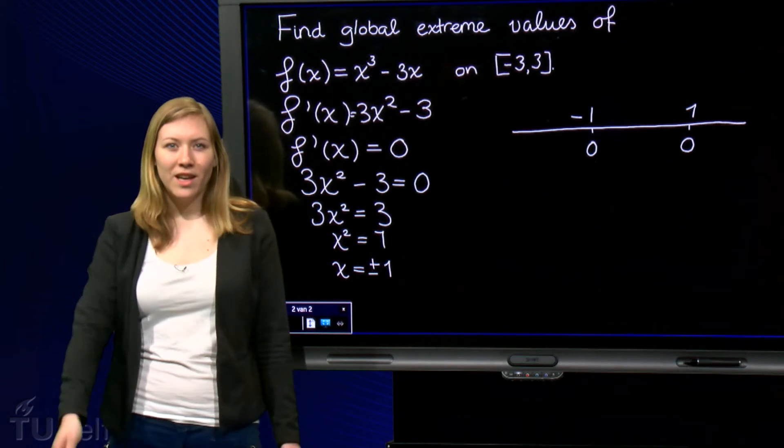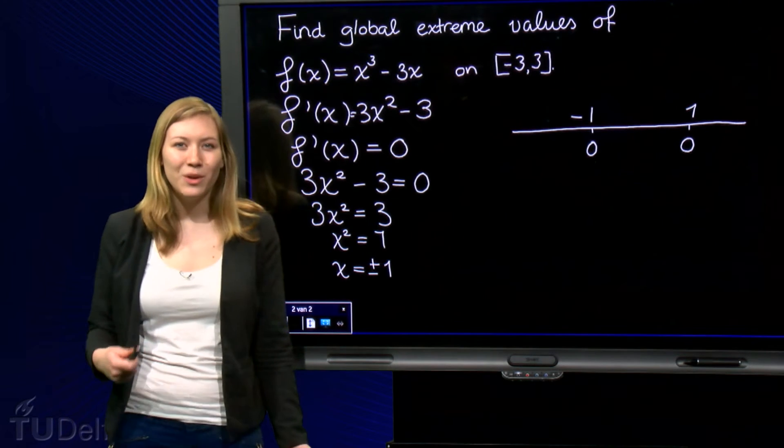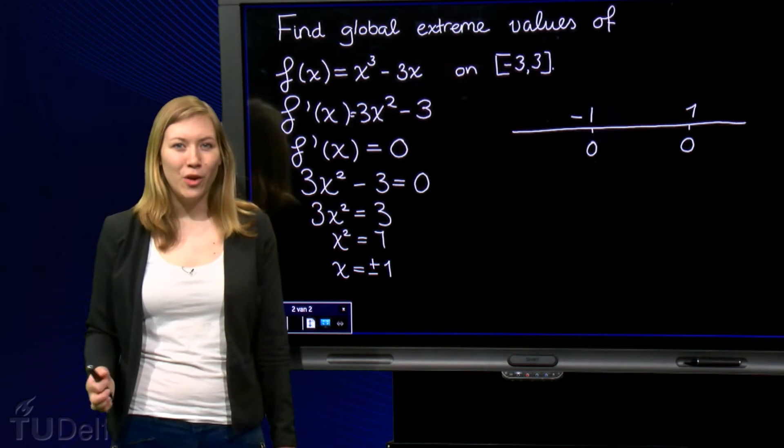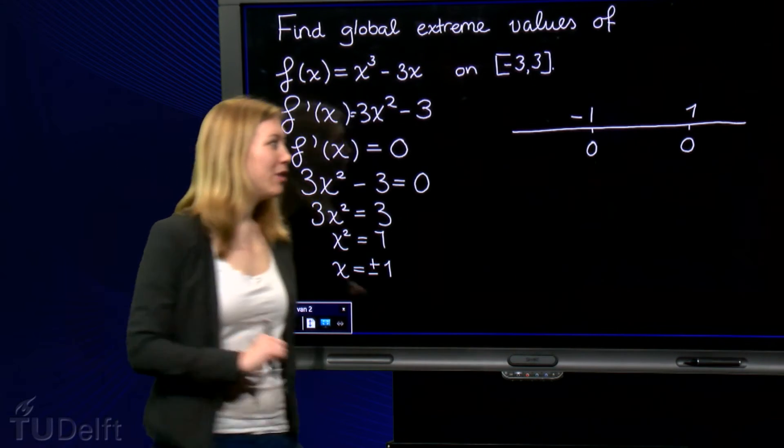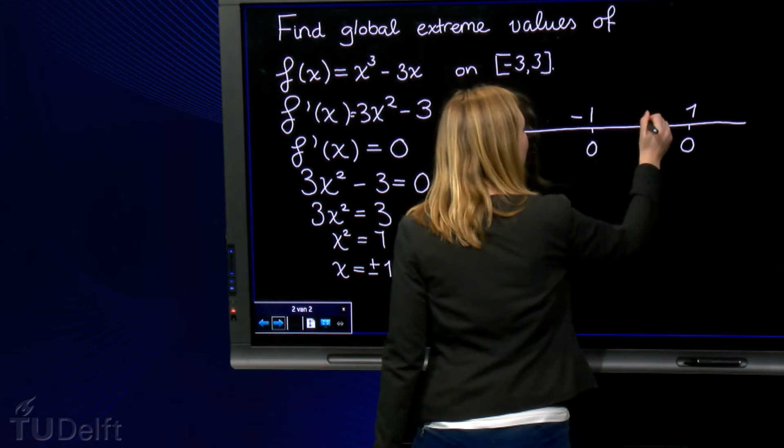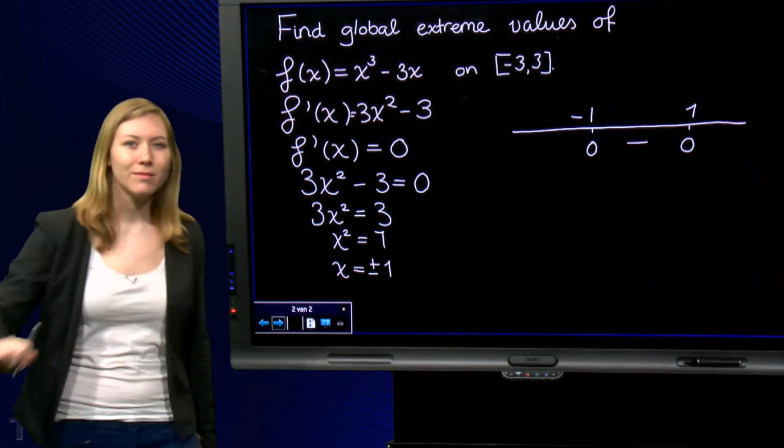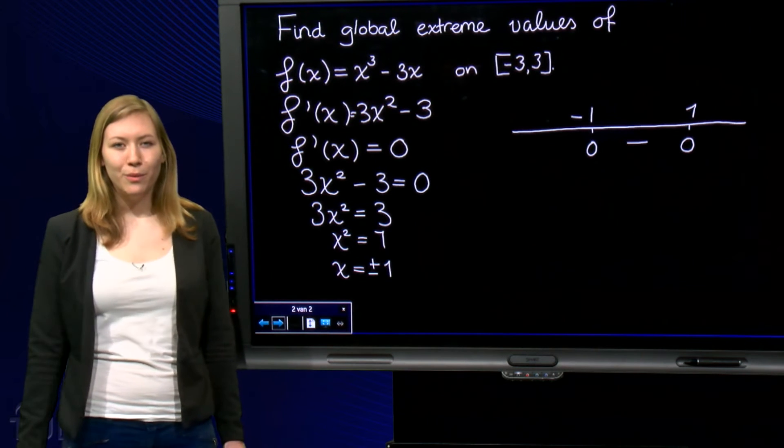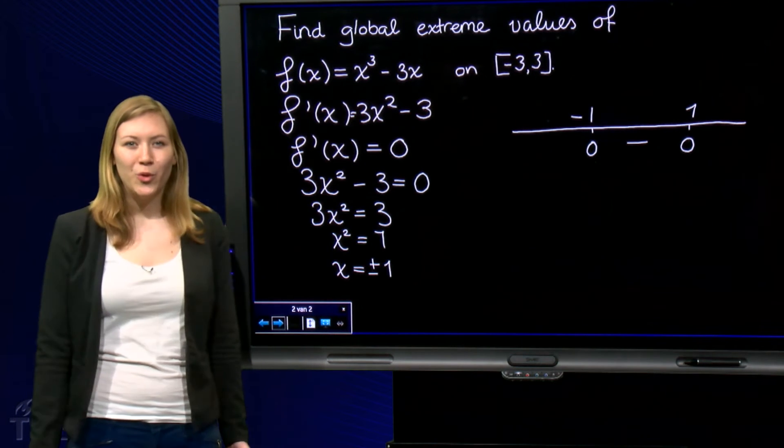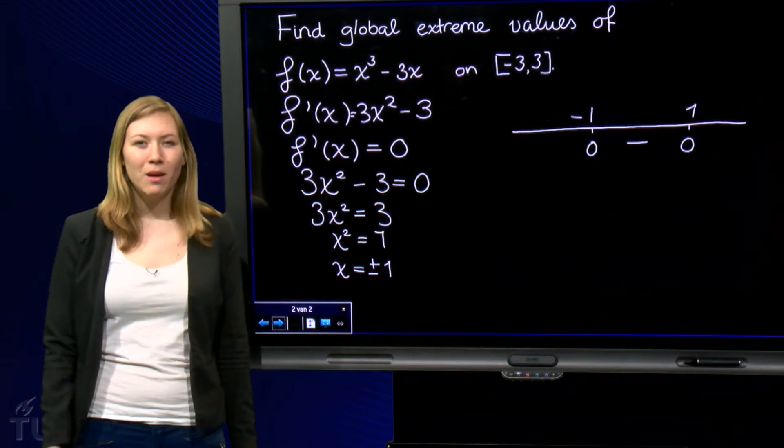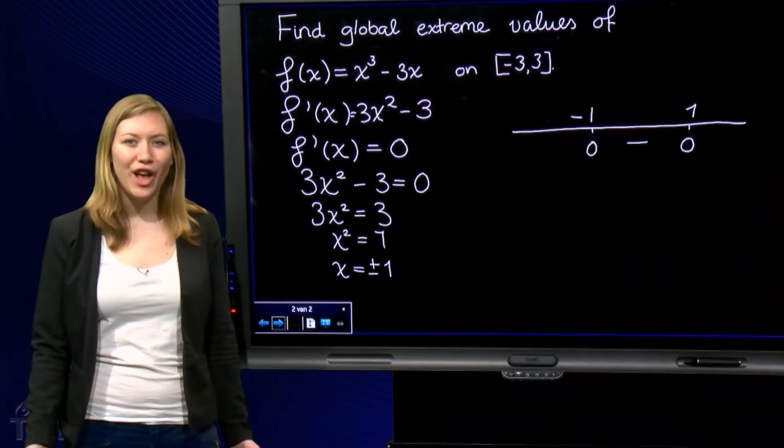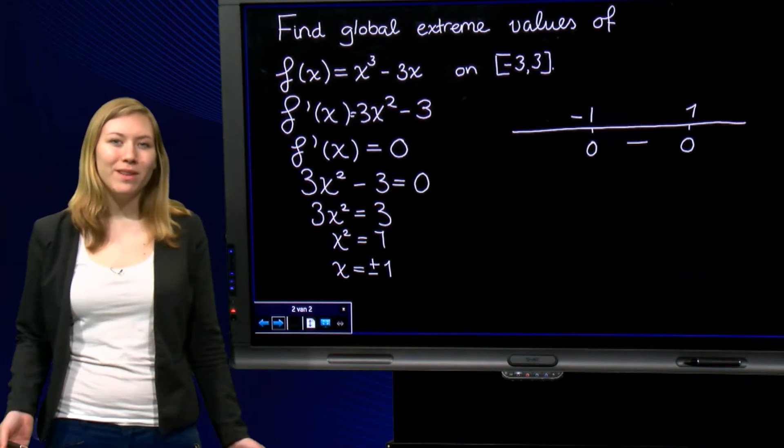At 0, the derivative is equal to minus 3, so it's negative there, it's decreasing. At 2, the derivative equals 3 times 2 squared minus 3, which equals 9, so the function is increasing there.